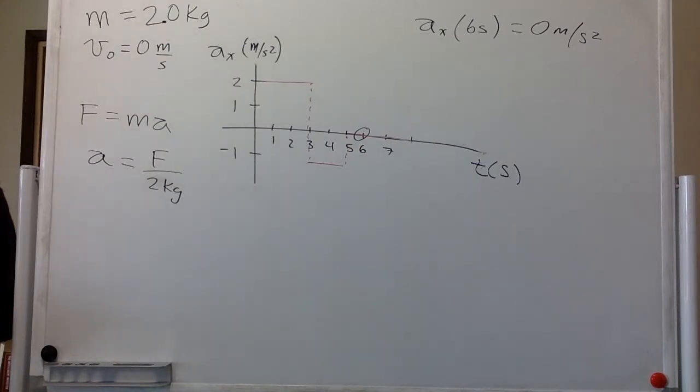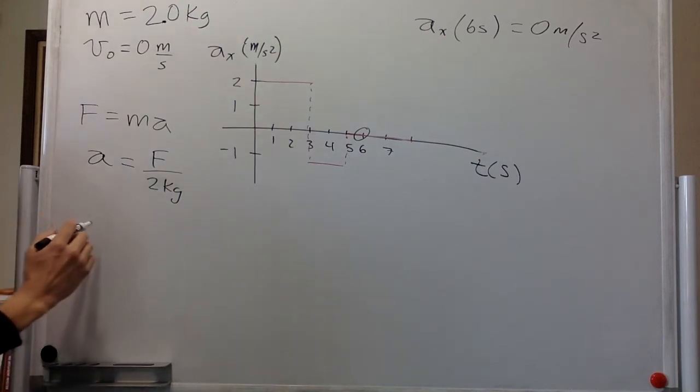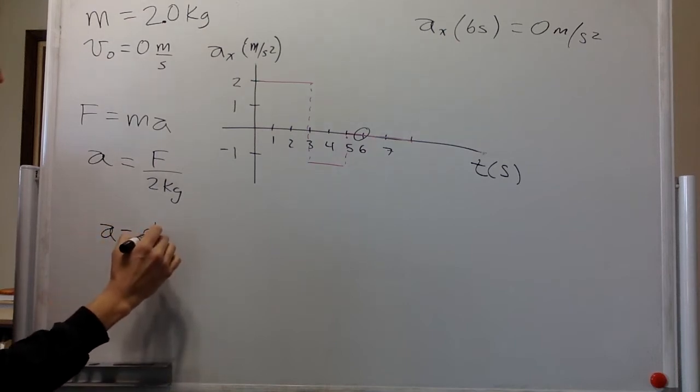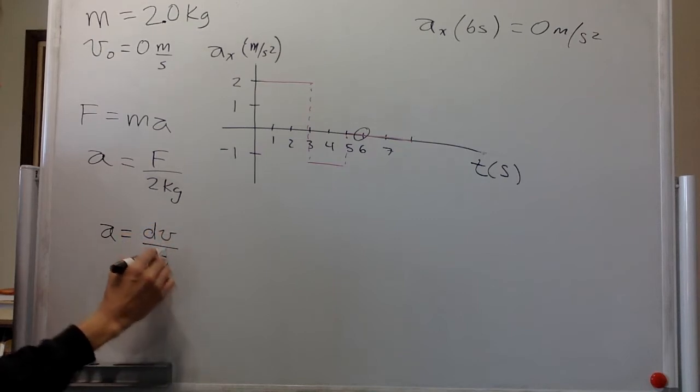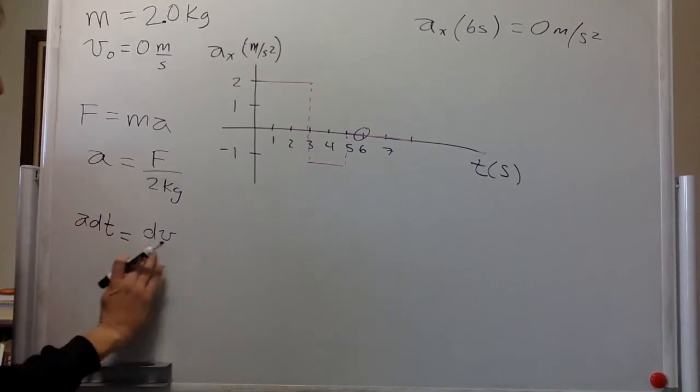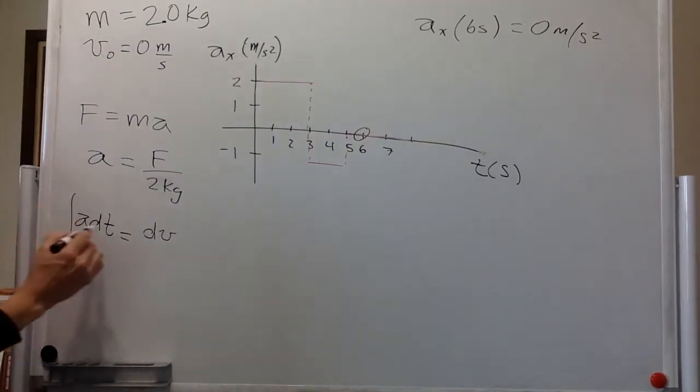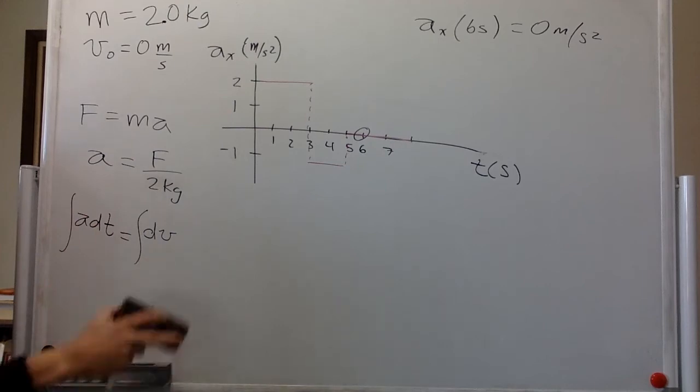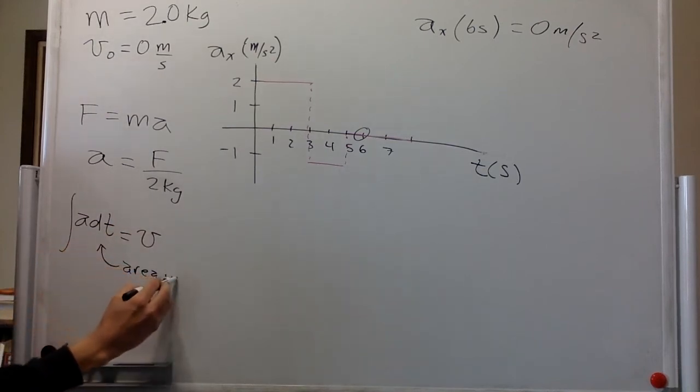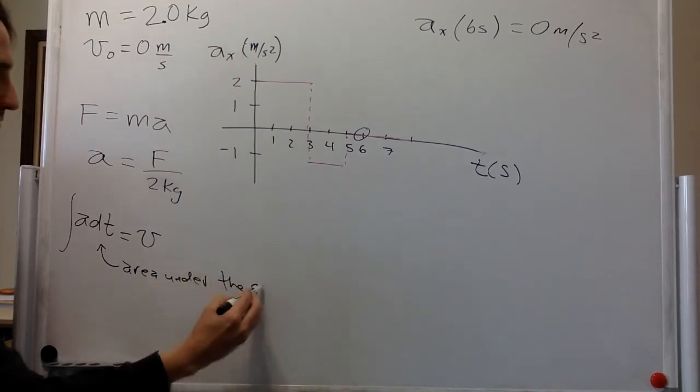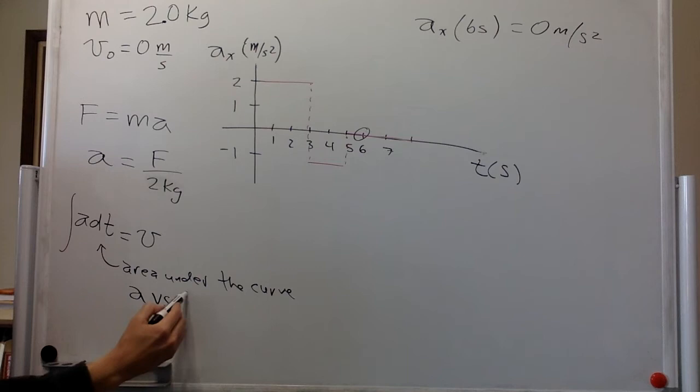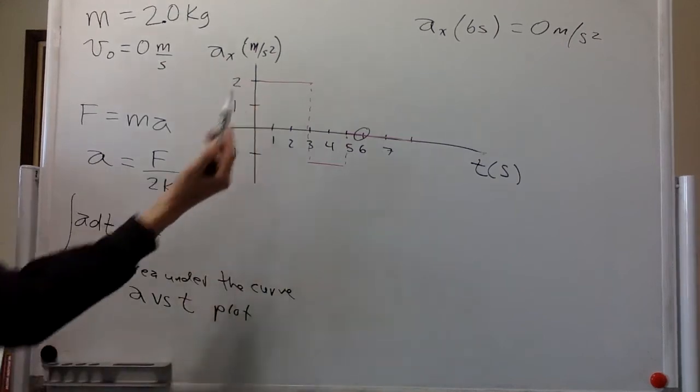And then we have to calculate the velocity. Remember that acceleration is change in velocity with respect to time. So if we move the time over here, acceleration dt equals dv. And if we integrate, we get the velocity. So the velocity is the area under the curve of an acceleration versus time plot, which is exactly what we have over here.